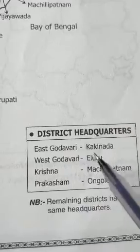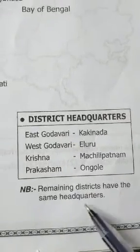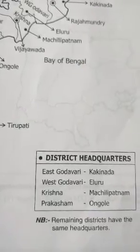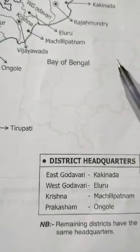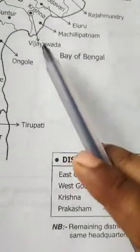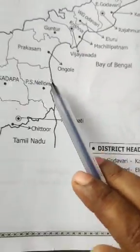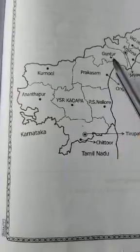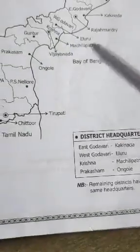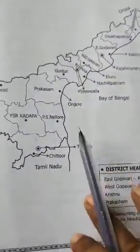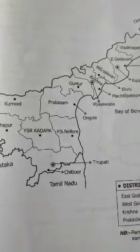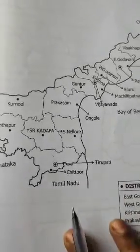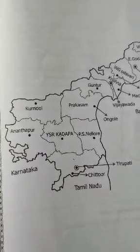So remaining 9 districts have the same headquarters — that means Srikakulam, Vijayanagara, Visakapatnam, Guntur, Nellore, Kadapa, Anantapur, Kurnool — all these districts have the same headquarters. Now there is a proposal to add more new districts. Jagan government is planning. If they come, then we can see. Now you have to learn all these.